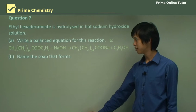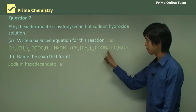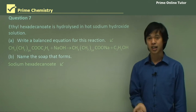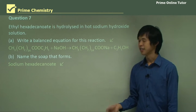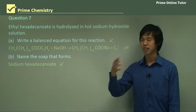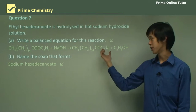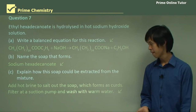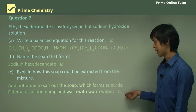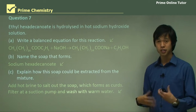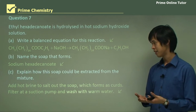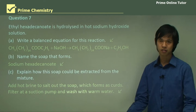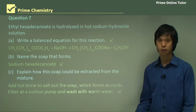Name the soap that forms: sodium hexadecanoate — sodium, 16 carbons (hexadeca), it's an alkanoic acid that has lost its hydrogen so it's an -anoate group, giving hexadecanoate, with sodium at the front. To extract this soap from the mixture: add hot brine to the solution, which causes the soap to form curds and precipitate out. Then filter using a suction pump and wash with warm water.